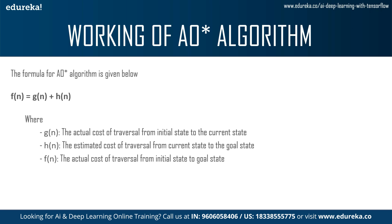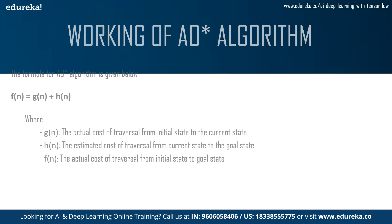Next, h(n) is the estimated cost of traversal from the current state to the goal state. So if you are currently in the US and need to go to Mexico, h(n) is the estimated cost you will need to pay in the future. Finally, f(n) is the total cost of traveling from the initial state to the goal state — the complete amount of expenses for your entire trip from Canada to the US and then to Mexico.